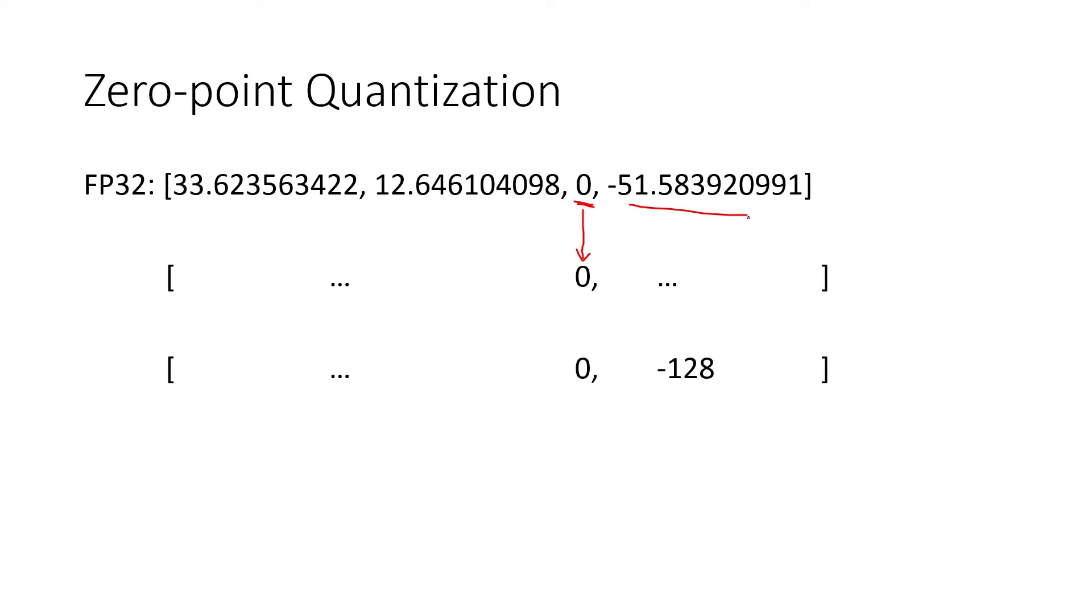Next, we take the maximum absolute value element and map it either to negative 128 or 127. In this case, the maximum absolute value element is negative 51.5, so this gets mapped to negative 128. The quantization has to be a linear transformation, so with two elements, the rest of the elements are determined as well. Finally, to get the int8 representation, we add 128 to each element, so all of the elements are positive.